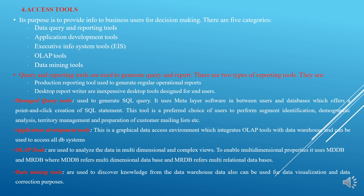Access tools provide information to business users for decision making. There are five categories: data query and reporting tools, application development tools, executive information system tools, OLAP tools, and data mining tools. Query and reporting tools are of two types: production reporting tools used to generate regular operational reports, and desktop report writers which are inexpensive tools for end users. Managed query tools generate SQL queries using meta layer software between users and databases, offering point-and-click creation of SQL statements.